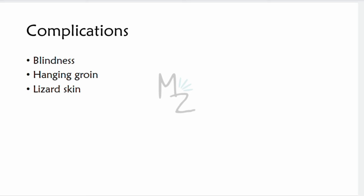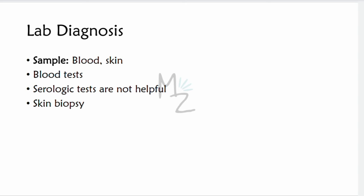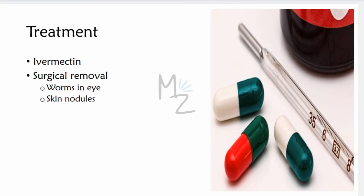For lab diagnosis, samples of blood and skin are needed, though sometimes urine and sputum are also used. Examination of blood for microfilariae is not useful because they do not circulate in the blood, but eosinophilia is common. Serologic tests are not helpful. Skin biopsy of the affected skin reveals microfilariae, as seen in the biopsy sample shown for a patient with onchocerciasis.